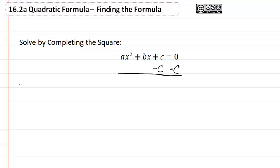I'm going to move this over to the side here. So we get ax squared plus bx equals negative c.